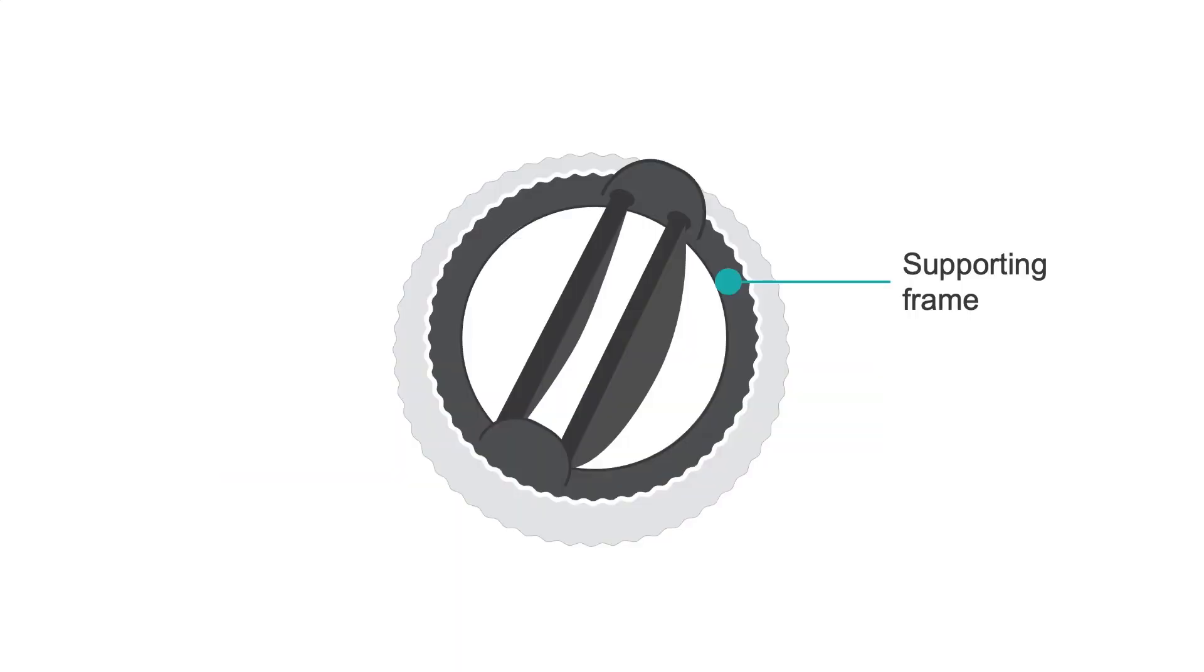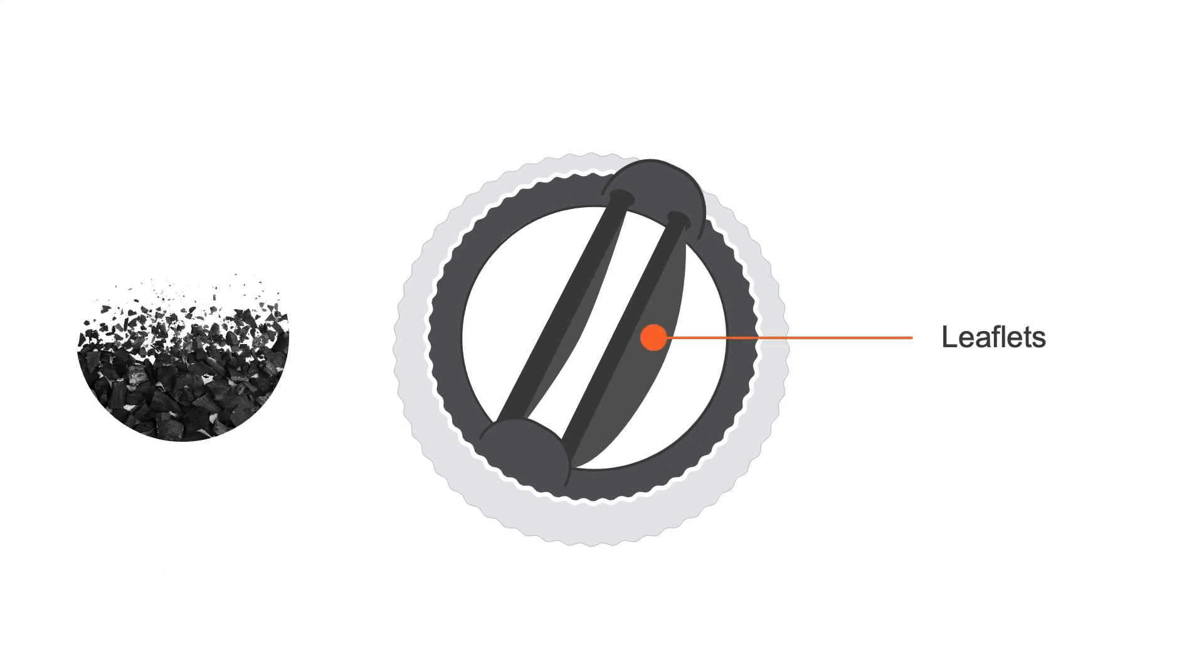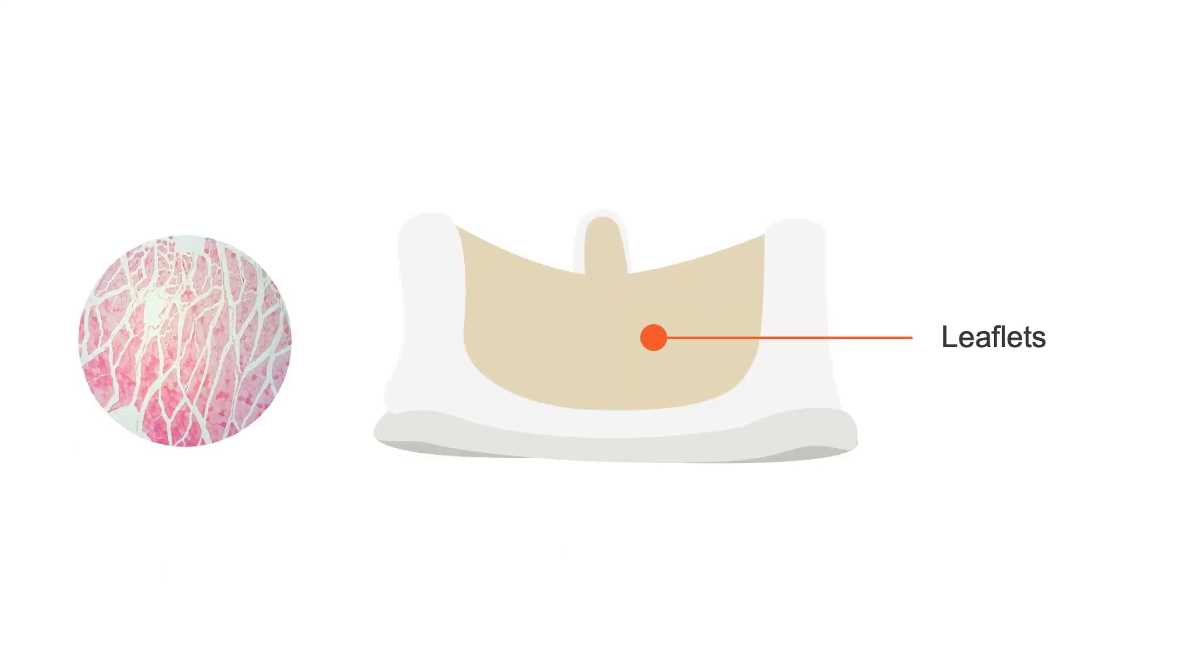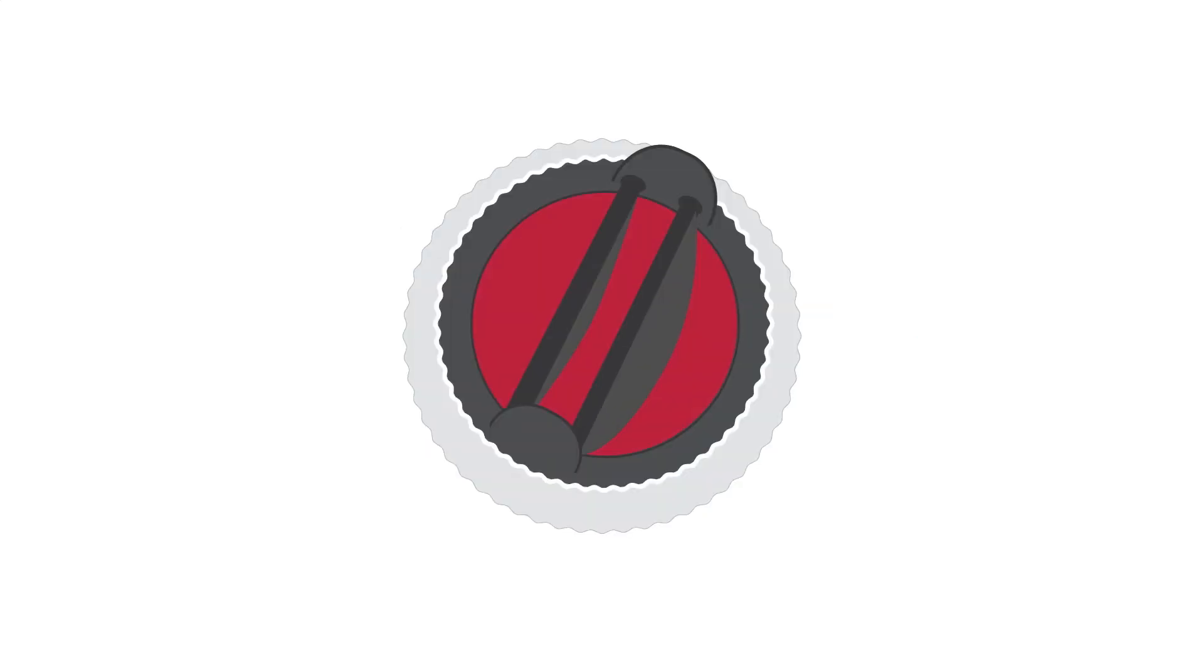The supporting frame is composed of alloy or polymer materials that absorb some of the forces acting on the leaflets. The leaflets are made of carbon for mechanical valves and tissue for bioprosthetic valves, and they can open and close to allow blood flow across the chambers.